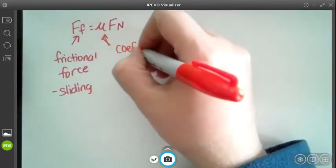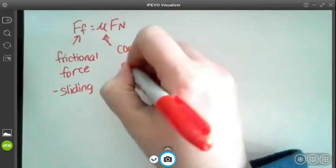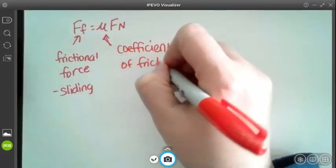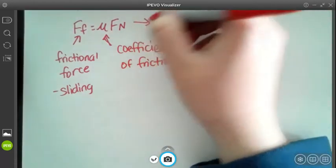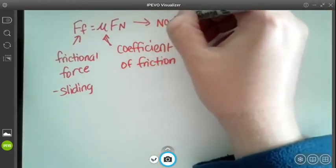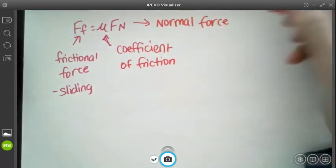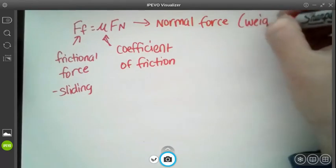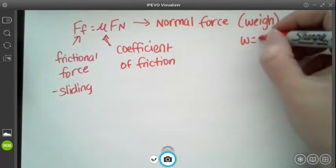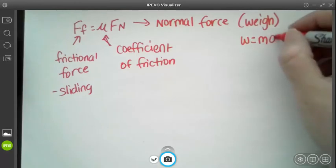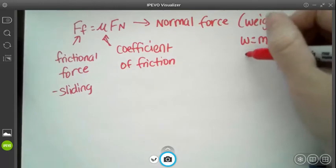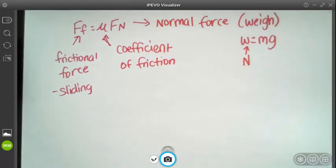This right here is called a mu, this is the coefficient of friction. And that last one, normal force, is what Fn is. Normal force a lot of the times is going to be weight. We're going to be given a mass and then we have to use w equals mg in order to solve the equation because weight is in newtons and that's what we need our force to be in.